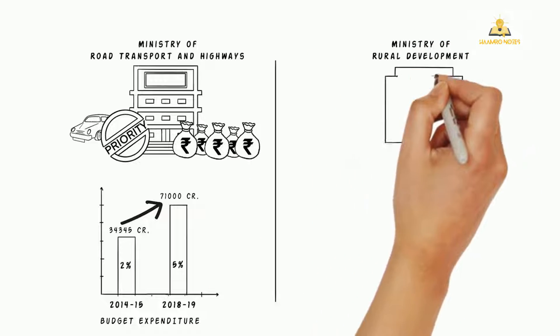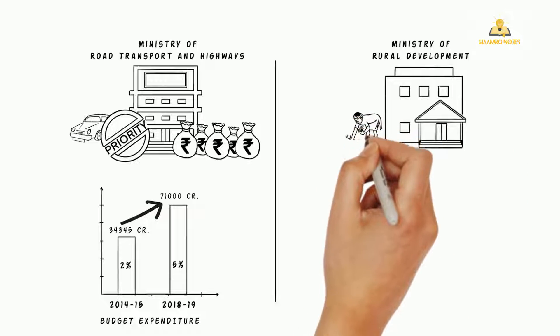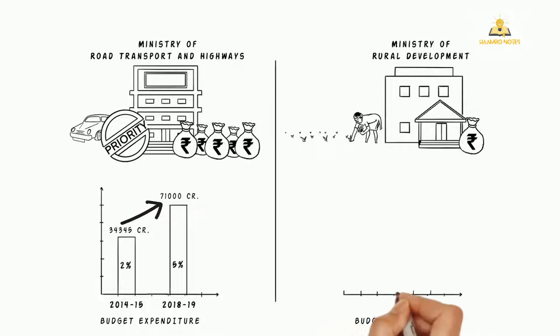On the other hand, the Ministry of Rural Development's total expenditure had actually declined during this same period by nearly 13,000 crore rupees and correspondingly its share too. So it could be inferred that for this period, building infrastructure was very important, while perhaps not as much priority was given to rural development.